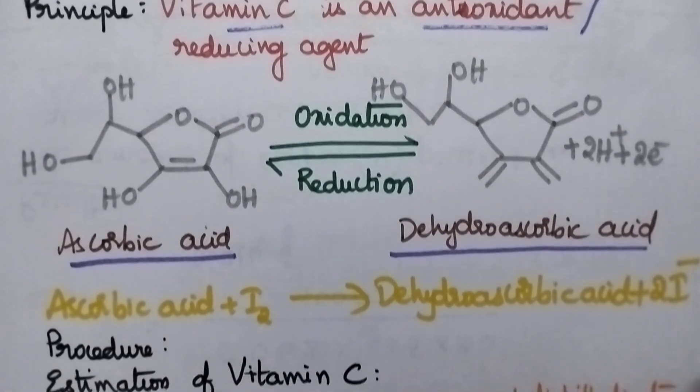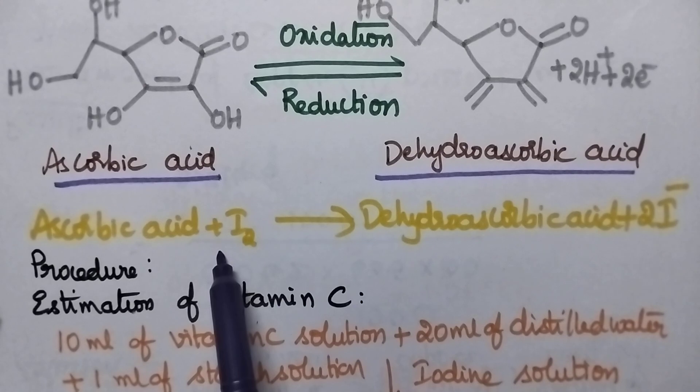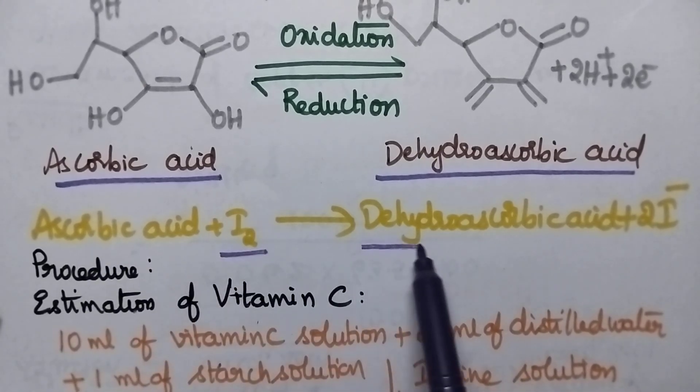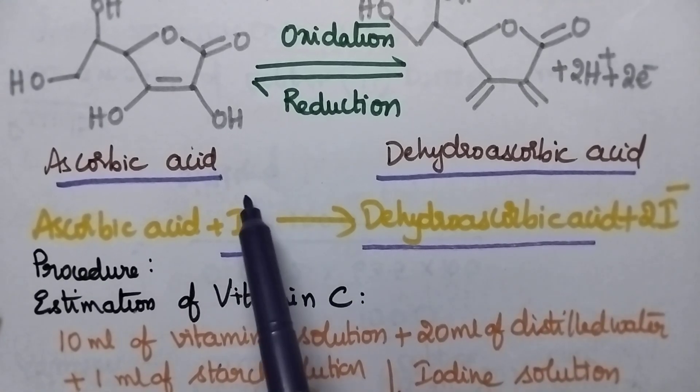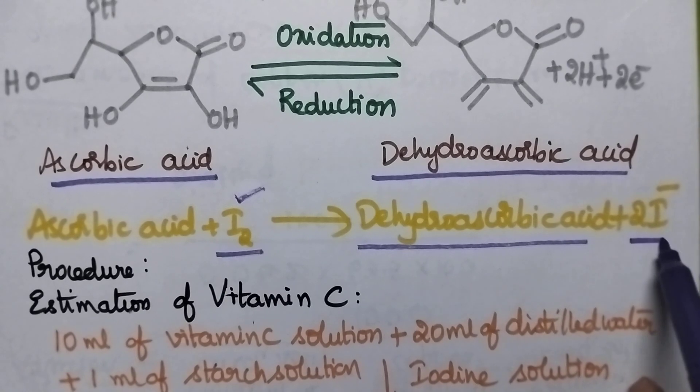Whenever vitamin C solution is titrated against iodine solution, ascorbic acid is oxidized into dehydroascorbic acid whereas iodine solution is reduced into iodide ions.